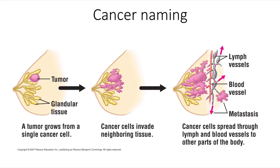A tumor grows from a single cancer cell. Those cancer cells can then invade neighboring tissue, and if those cancer cells spread through other parts of the body, tumors can form in those locations as well, interfering with the functioning of those tissues and taking those resources.